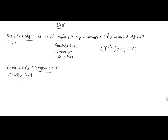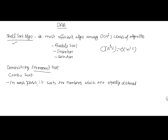In each pass, Shell Sort sorts numbers which are equally distanced apart. It compares numbers which are d distance apart.